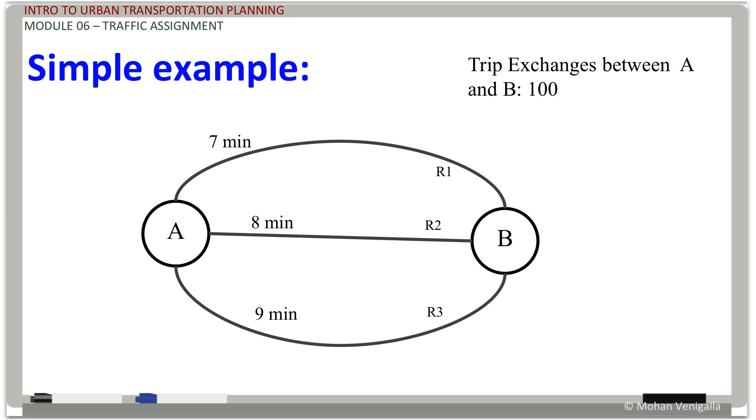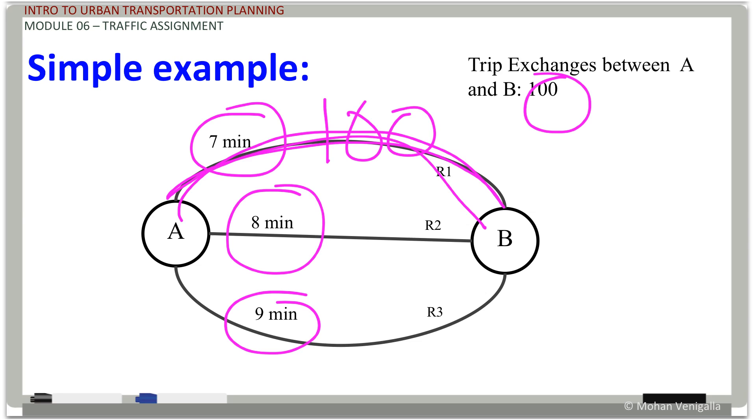So here is a simple example. From A to B, route one is seven minutes, route two is eight minutes, and route three is nine minutes, and you have hundred trips. Bingo. Put them all on the shortest path. All or nothing. You put all of them there. That's it.